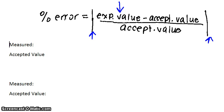So if you get a negative number on top, if the accepted value is bigger, then you just need to take the positive of that. And you're going to times this whole equation by 100 to get the percent of your error.